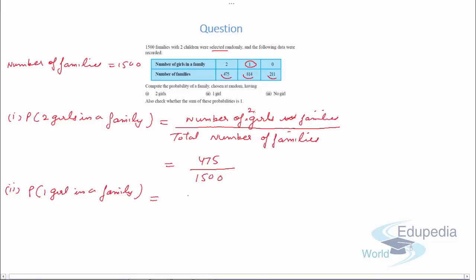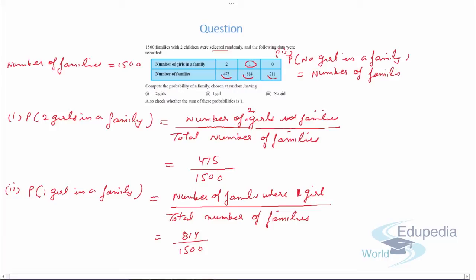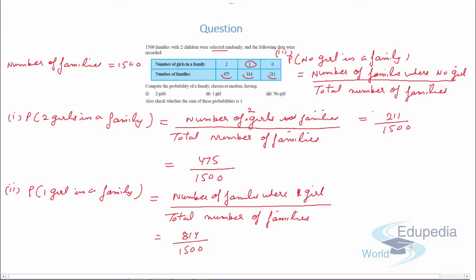The second part: probability of 1 girl in a family equals number of families with 1 girl upon total number of families, which is 814 upon 1500. The third part: probability of no girl in a family equals number of families with no girl upon total number of families, which is 211 upon 1500.